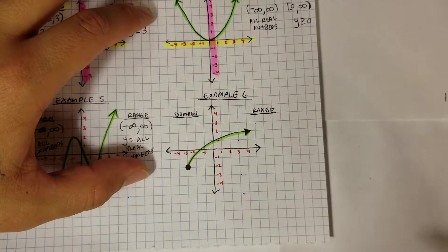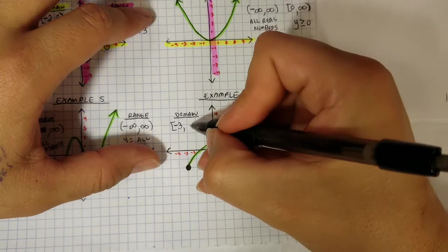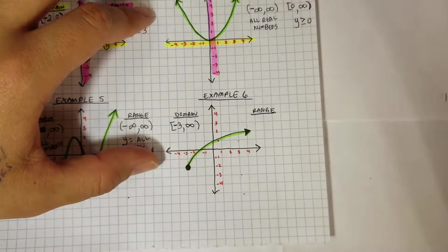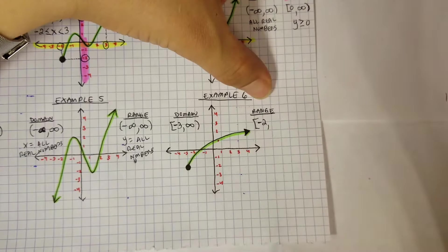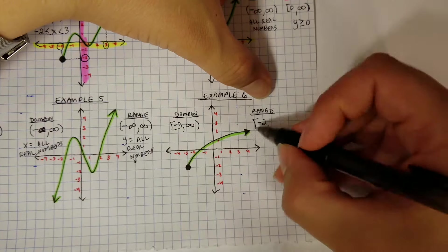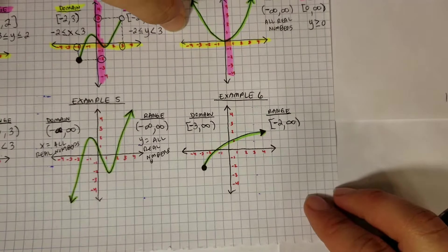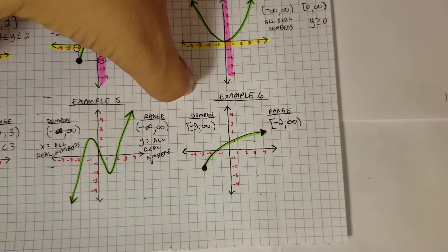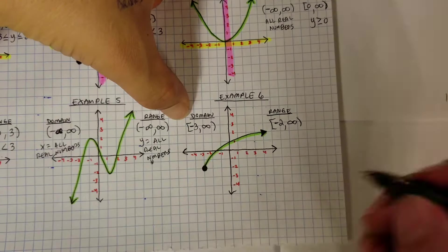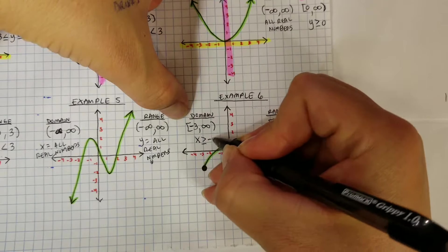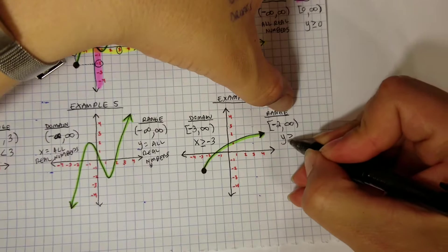Example 6 — domain and range. The domain starts at negative 3 — closed circle, so a bracket — and never ends to the right, so positive infinity. Domain is [-3, ∞). The range: the bottom is at negative 2 — closed circle, so a bracket — and goes up forever, so positive infinity. Range is [-2, ∞). As inequalities: x ≥ -3 and y ≥ -2.